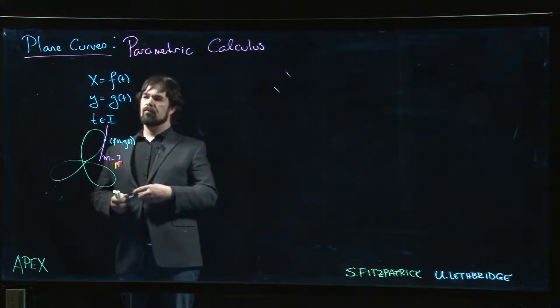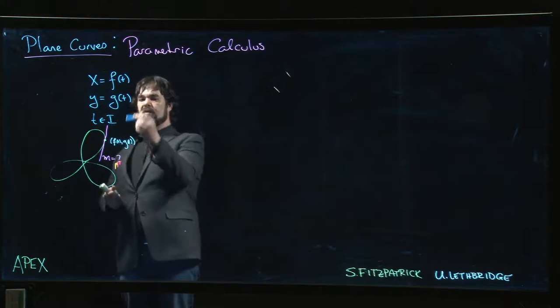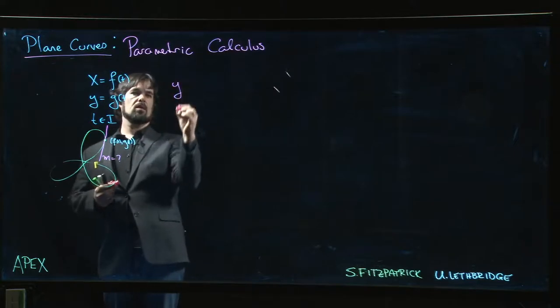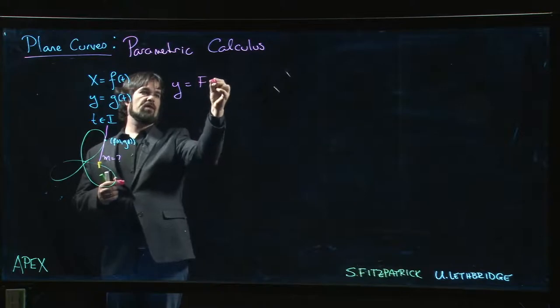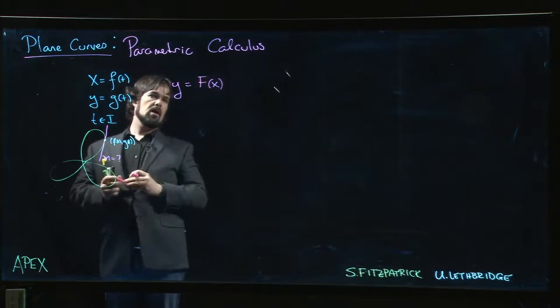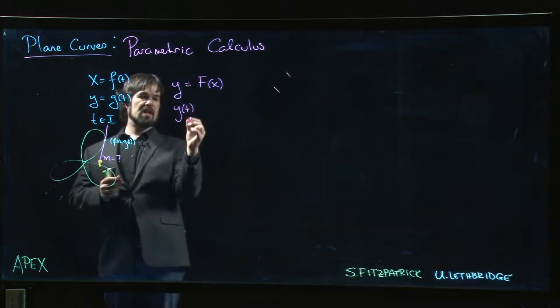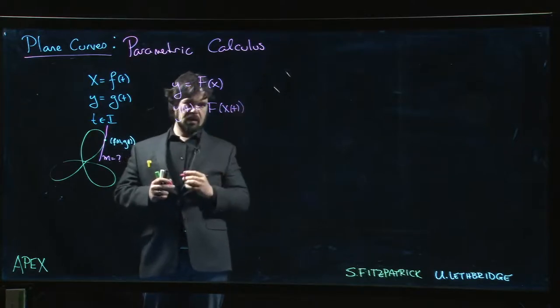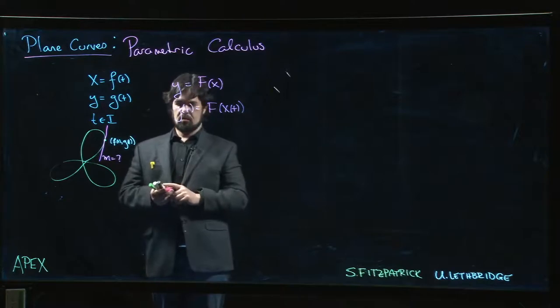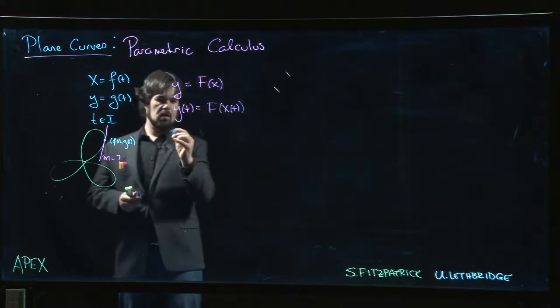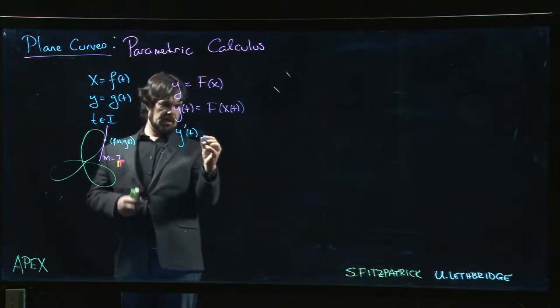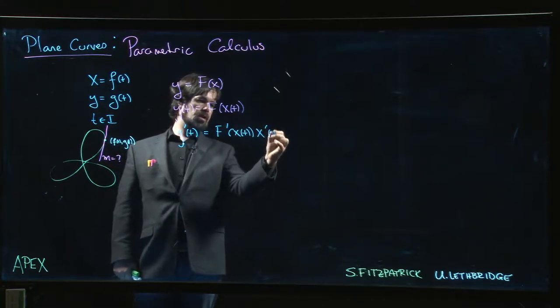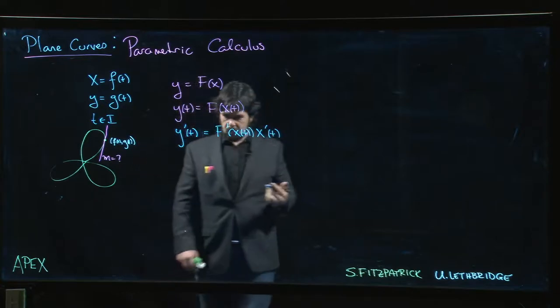So let's suppose that we actually are in a situation where—let's say let's just use big F—so let's say that y is equal to F of x. Well then it follows that y(t) would be F of x(t). And take derivatives, so y'(t) will be F'(x(t)) times x'(t).